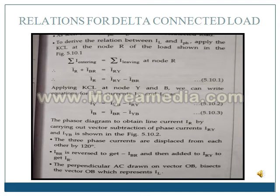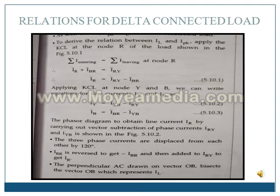The three phase currents are displaced from each other at an angle of 120 degrees. To show IR, we perform the vector subtraction of IRY and IBR. Minus IBR is the reverse of IBR, and by drawing a parallelogram, the resultant IR equals IRY plus (minus IBR). In similar way, IY and IB are shown using their respective equations. Here we are showing it only for one phase; the phasor diagram for R phase is shown in the next slide.